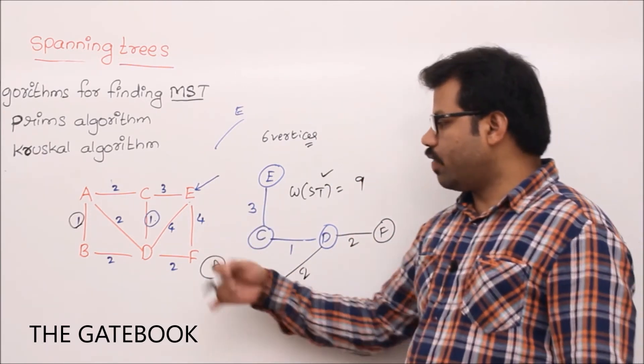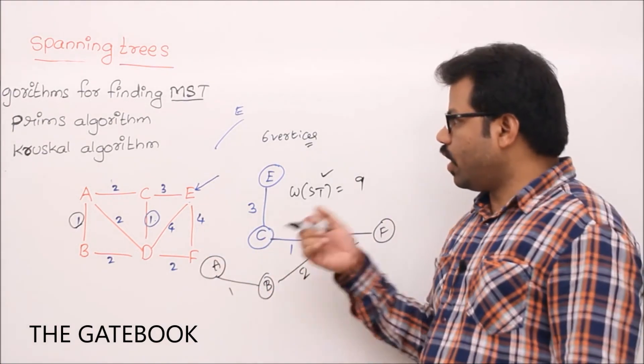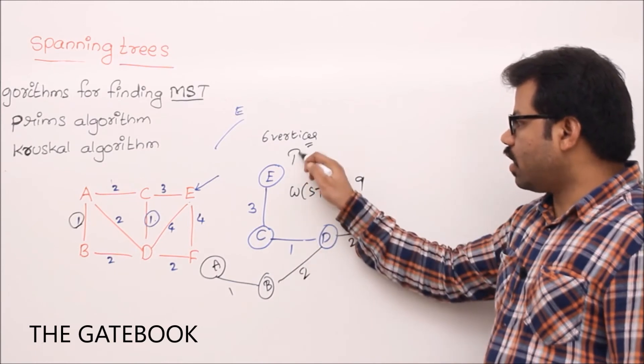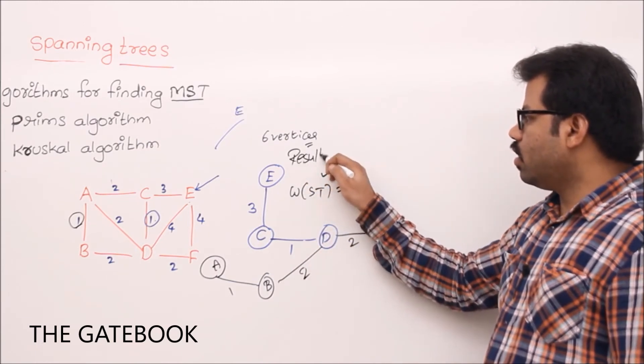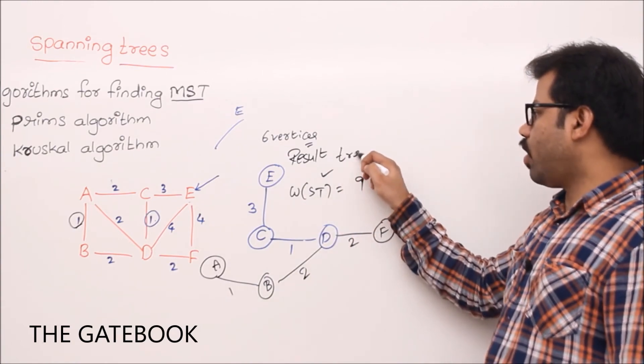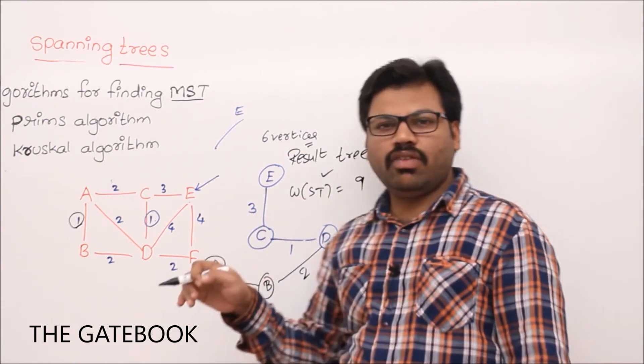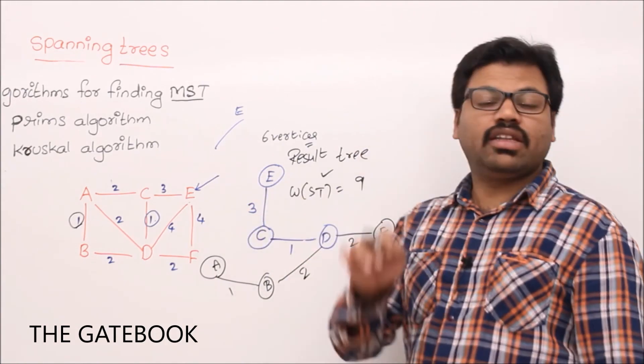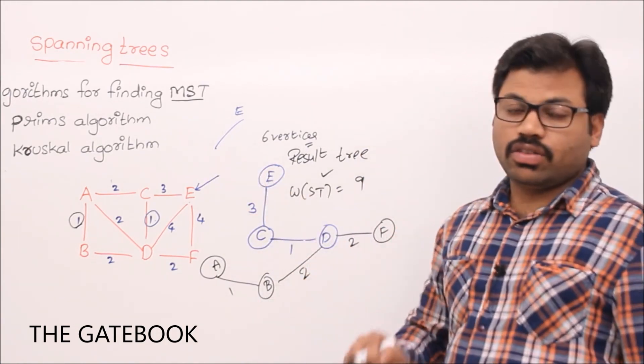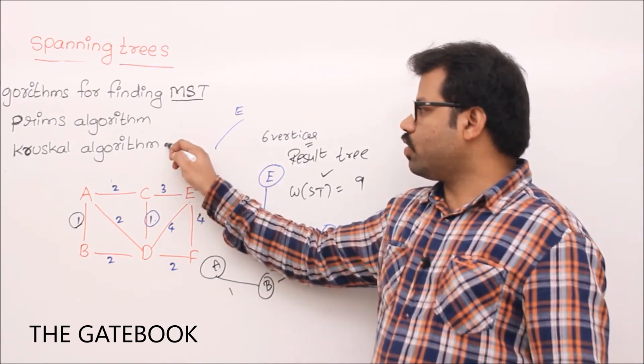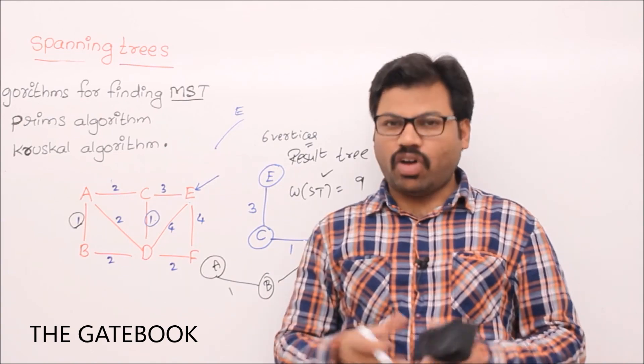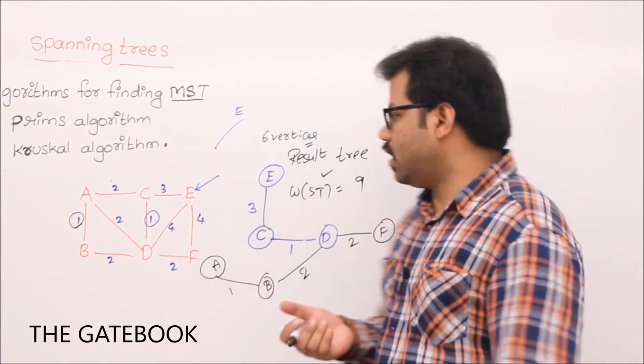So, we can start from F, otherwise D, anywhere we can start and continue and find out things. Now, here one important observation is, this is called result, right? In the result, always whatever you have, the structure is always tree. From the scratch, from the start itself, the result was tree. And we were maintaining the tree from the start to end. So, there is a Kruskal algorithm, we are going to study on that Kruskal algorithm. So, the result sometimes will become forest, that means need not be a tree. We will see that.